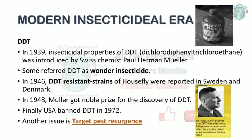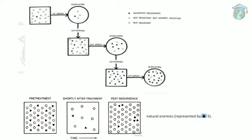Two issues arose from DDT: pest resistance and pest resurgence. For pest resistance, consider a plot with two kinds of insects — triangles representing non-resistant insects and dots representing inherited-resistant ones. Inherited-resistant insects have the capacity to fight pesticides because resistance is encoded in their genes. After the first spray, the inherited-resistant insects survive along with some lucky survivors among the non-resistant ones, represented by circles, and these survivors reproduce.